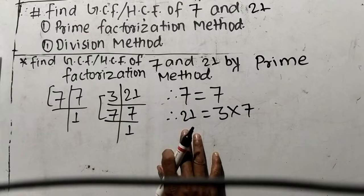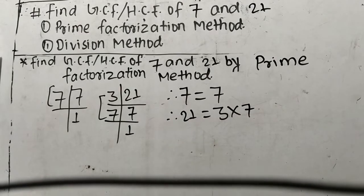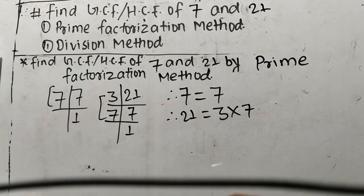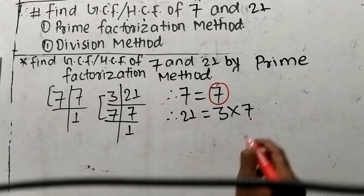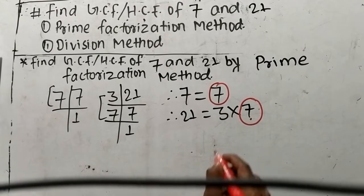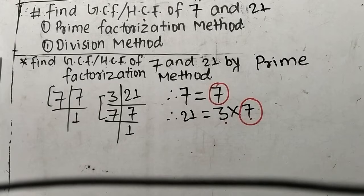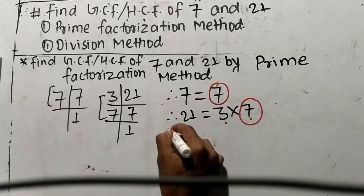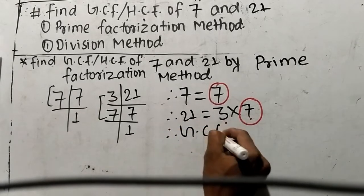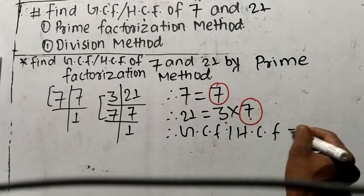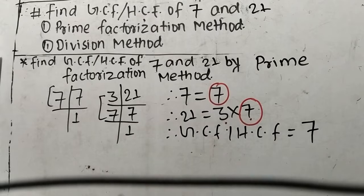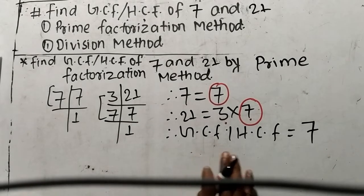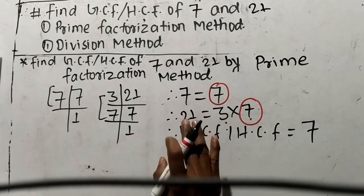We have written the prime factors of 7 and 21. Now we determine the common factors — here is 7 and here is also 7, so 7 is our common factor. Here is 3, which is a non-common factor. GCF or HCF is the product of all common factors, and the common factor is only 7 here. Therefore, 7 is the GCF or HCF of 7 and 21.